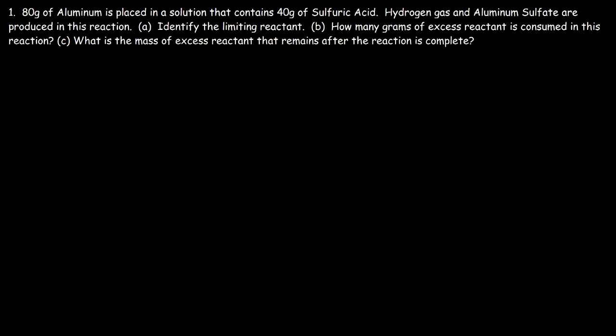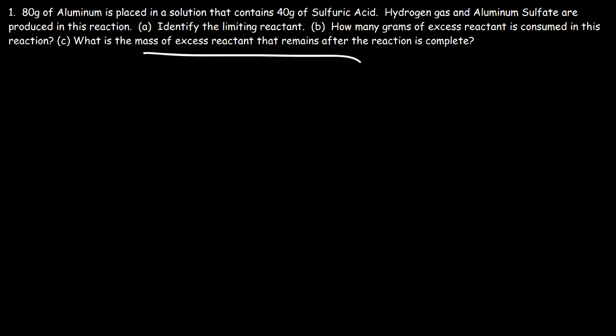In this video, we're going to talk about how to find the mass of the excess reactant that remains after the reaction is complete. I've broken up the process into three parts. First, identify the limiting reactant. Next, find how many grams of excess reactant is consumed in the reaction. Then, once you complete steps one and two, you can find the mass of the excess reactant left over. So let's begin.